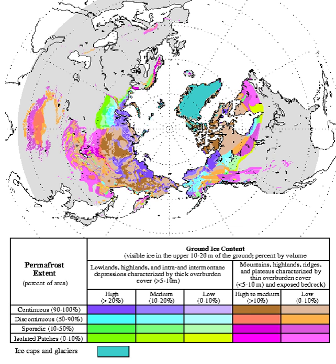The cycle includes the exchange of carbon dioxide and methane between terrestrial components and the atmosphere, as well as the transfer of carbon between land and water as methane, dissolved organic carbon, dissolved inorganic carbon, particulate inorganic carbon, and particulate organic carbon.